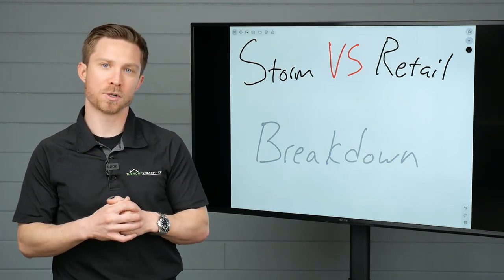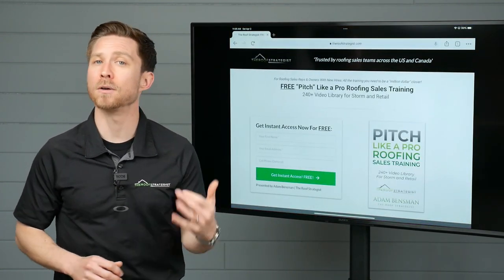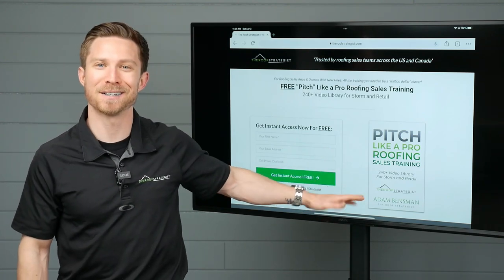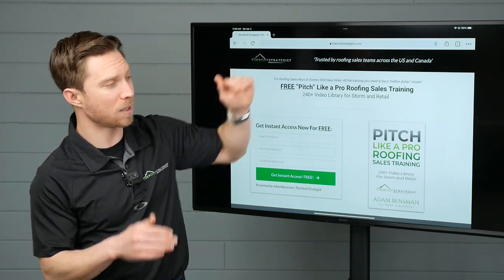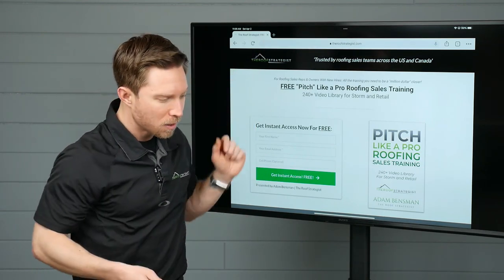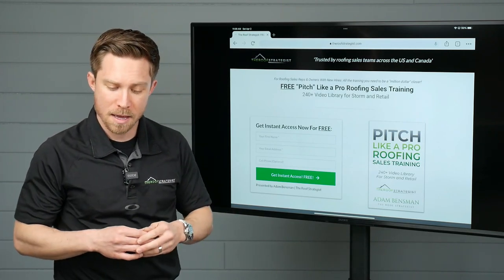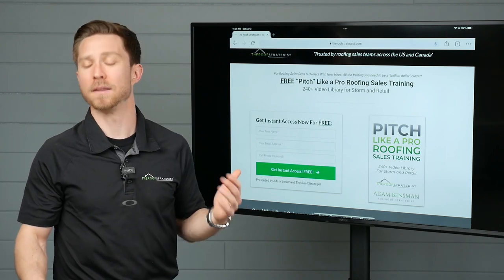And there's a link in the description below. But a great place to start off for free is in my Pitch Like a Pro roofing sales training video library. Over 300 videos now. I know it says 240, but we have over 300 in there. And there's playlists organized by categories. You're like, hey, I want more on retail or pitching, canvassing, objections, closing. You name it, there's a playlist in there for you, and it's 100% free. And again, you can get it at theroofstrategist.com or using the link in the description.